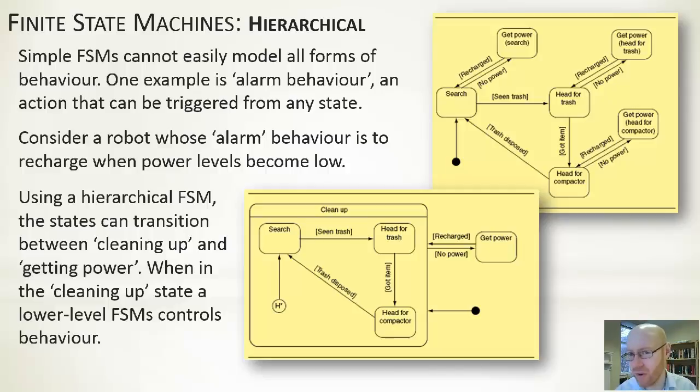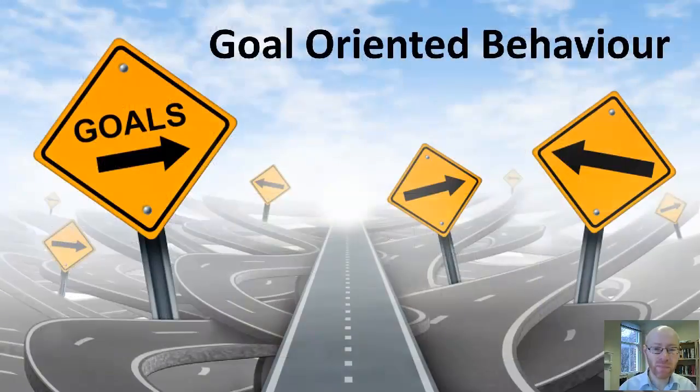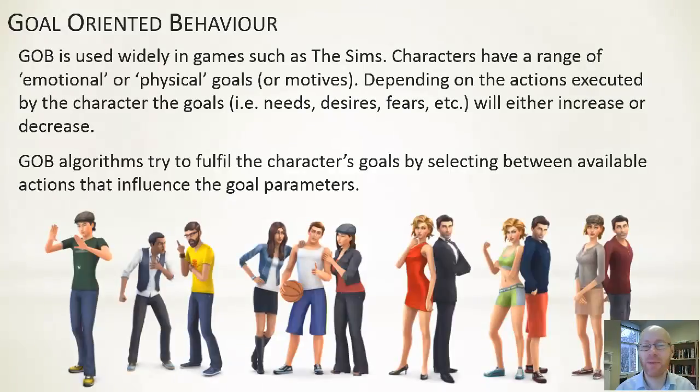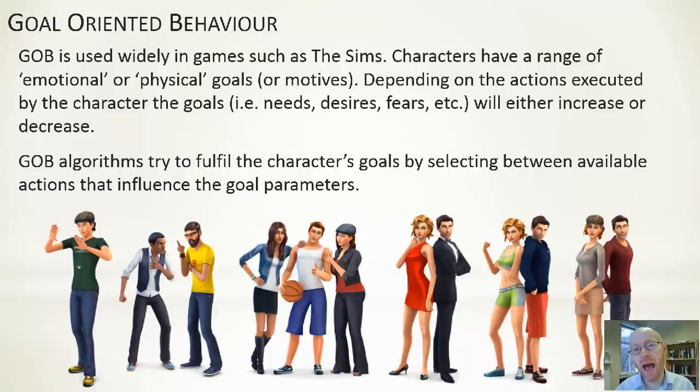So FSM is very commonly used, very flexible, certainly something worth considering. The last form of decision-making AI we're going to look at here is known as goal-oriented behavior, or GOB. It's the type of thing that's used quite broadly within games like The Sims. In essence, where you have an entity that has a range of different traits or characteristics or things that it wants to achieve. So it's not a single goal that it's trying to achieve, but there are multiple, several different things that we're trying to maximize.